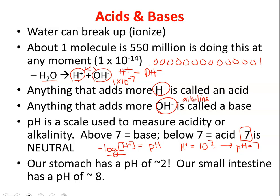Our stomach, for example, has a pH of about 2, so it's a strongly acidic environment. On the other hand, our small intestine — where food goes after the stomach — has a pH of about 8, so it's a little bit basic or alkaline.